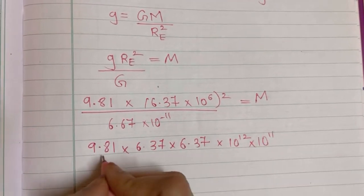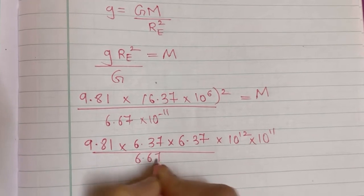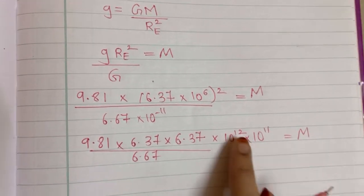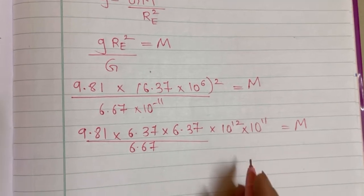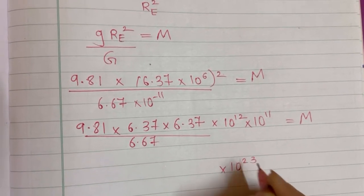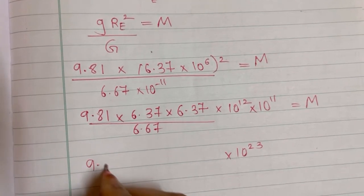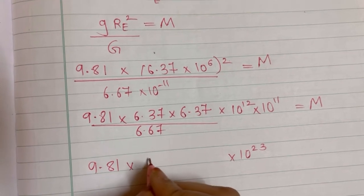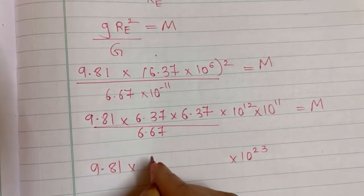Now 10 raised to 12 and 10 raised to 11 will get added and we will have 10 raised to 23 and here 9.81 into, you can also write it in this form, that is 6.37 the whole square upon 6.67 and that is your M.